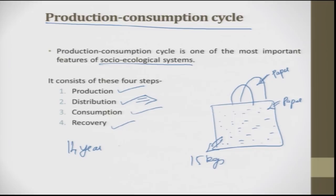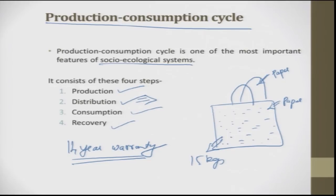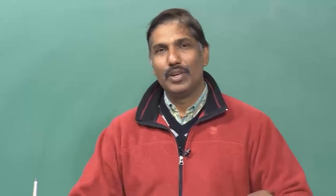Going back to the refrigerator example: the compressor has a 14-year guarantee, but you change the refrigerator once every 5 or 7 years. What happens to the compressor? Companies have come out with two models. First, they say come back to us and buy a new product where we reduce the cost of the compressor. Second, the company says they will remove only the compressor and take it as buy-back — the rest you can disperse to anybody. This is nothing but using recoverable parts from a product that can be placed in another product. I stop here and let us continue further in lecture 2. Thank you very much.